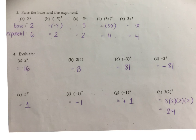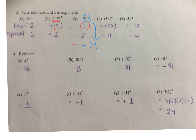State the base and exponent. Make sure that when there is a bracket, it's all of this — so negative 5 is the base. But for c, there's no bracket, so just the number 5 is the base. What would the answer be to c if you were to evaluate this? What's negative 5 squared? Negative 25. Good. You're evaluating 5 squared: 5 times 5 is 25.